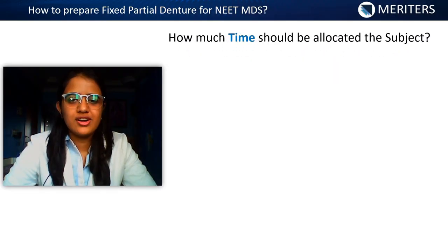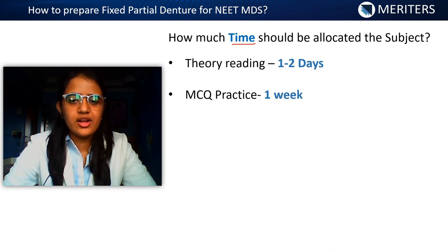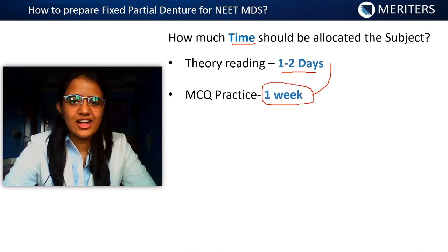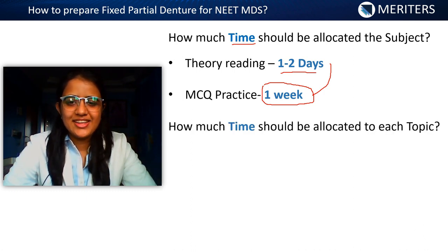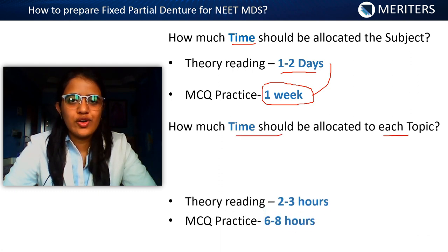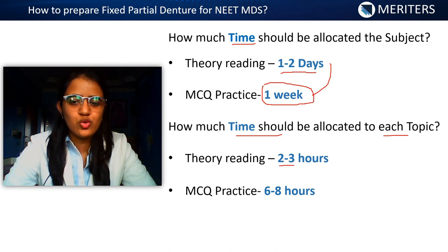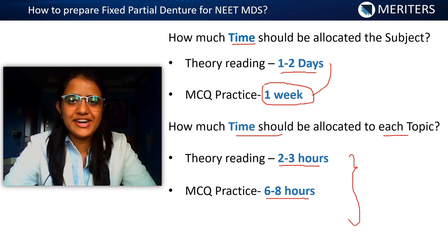For FPD, you can complete this entire topic within one week. In this one week, give one to two days for theory reading. It's a small and clinical subject, so it's advised not to take more than one week. For each topic, give around two to three hours of theory reading and six to eight hours of MCQ practice — this is for your first reading.